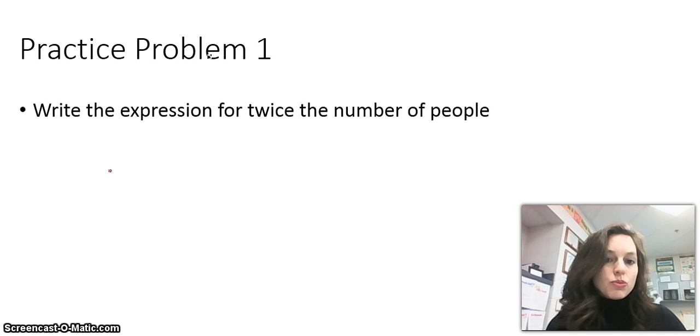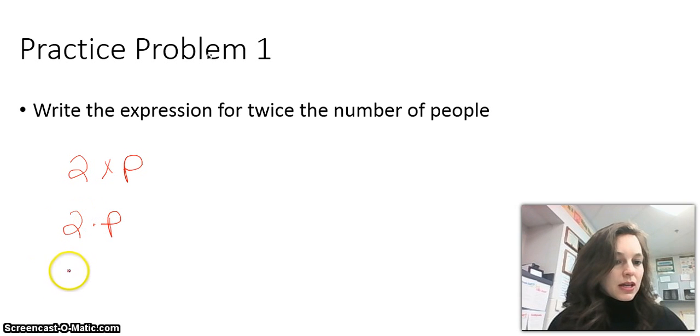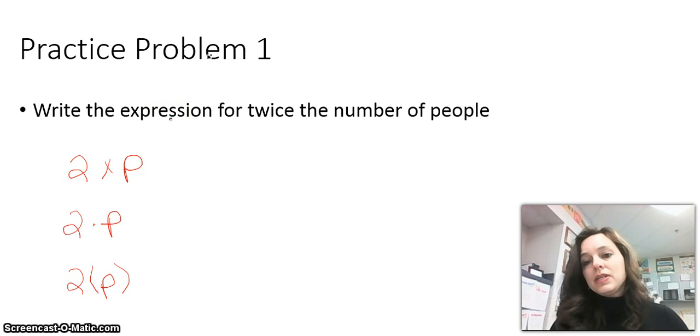All right, so we have twice the number of people. When I see twice, I know that that means 2. So my value for this expression is 2, the number of people. So I'm going to say that that is 2 times P, or the number of people. I can also express that 2 times P, or I could also express it as 2P. And the parentheses, all of this means 2 times the number of people. I could use X, Y, Z in the place of this P. I just picked P as a variable to stand for people.